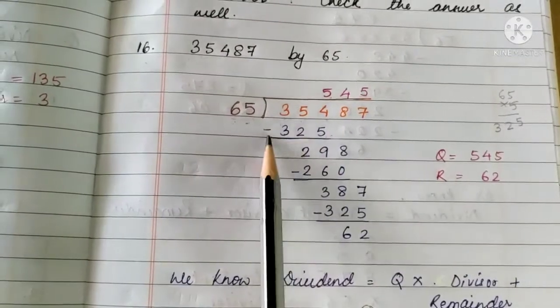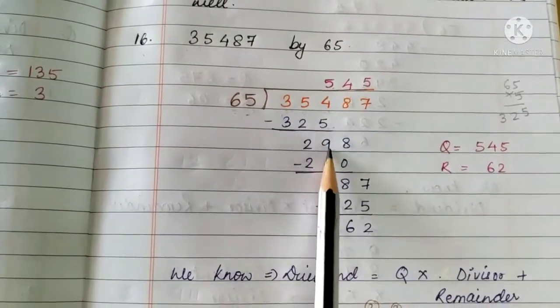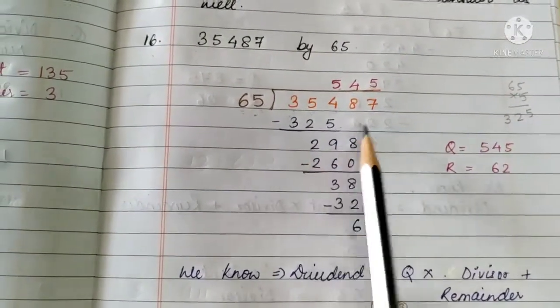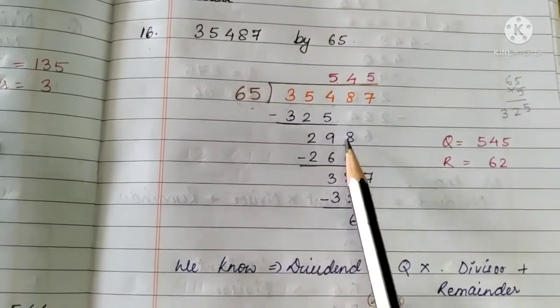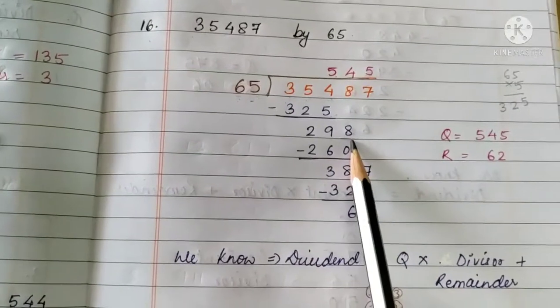That is, 325 is subtracted. The answer that we get is 29. Now, we bring down the next number 8. So, it is 298.